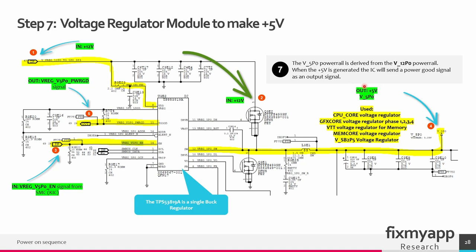In the last step we generate the 5 volt power on power rail. When the 5 volt is generated and everything is okay, the IC will output a power good signal called voltage regulator 5 volt power on power good, and this output signal goes to the Southbridge. The 5 volt is used for the CPU core voltage regulator, the graphics core voltage regulator phases 1 through 4, the VTT voltage regulator for memory, the memcore voltage regulator, and the Southbridge 2.5 volt voltage regulator. All those ICs responsible for creating those power rails need power from this 5 volt power rail.